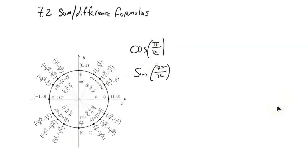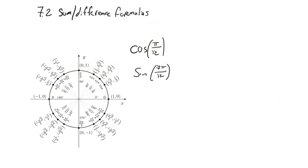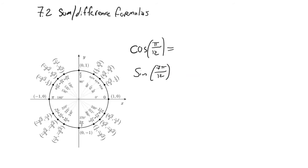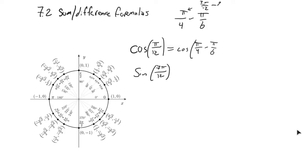What's convenient is I can actually make these from angles I do know. This pi over 12 — what I notice is it is the same as pi over 4 minus pi over 6. If those were both in terms of 12s, that's 3/12 minus 2/12 — so 3 of them minus 2 of them is 1 of them: 1 pi over 12.